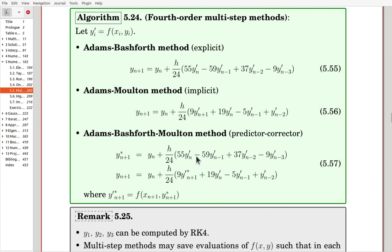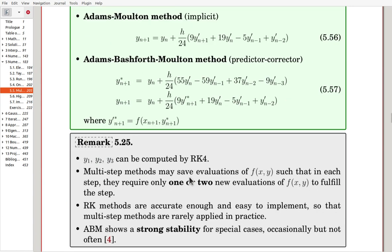Once we are using this predictor-corrector scheme, that's one evaluation, and we have another evaluation here. This value is used over there, so we need two evaluations for each step. That's more efficient than Runge-Kutta method. Fourth-order Runge-Kutta method requires four evaluations of the slope.